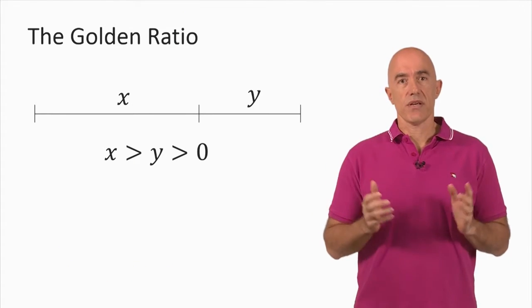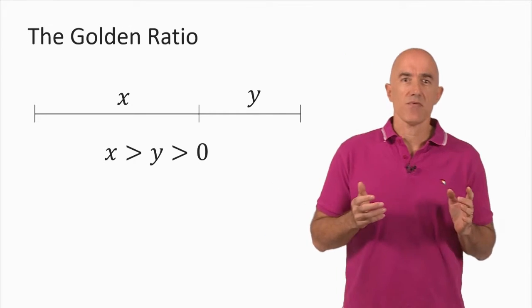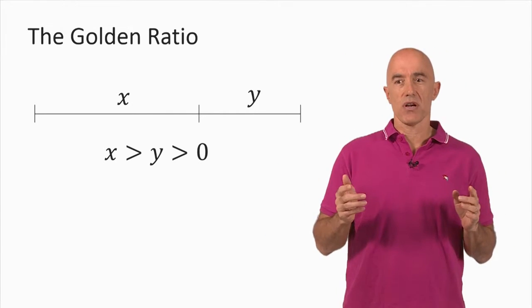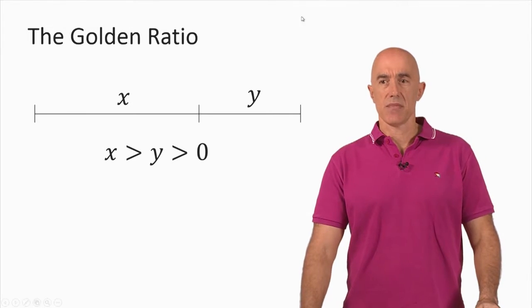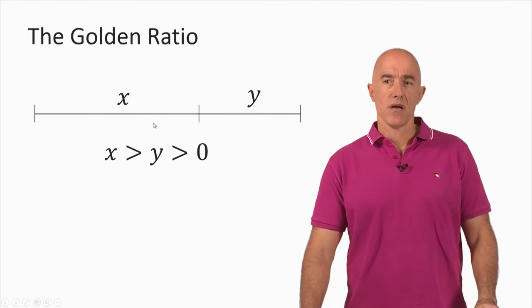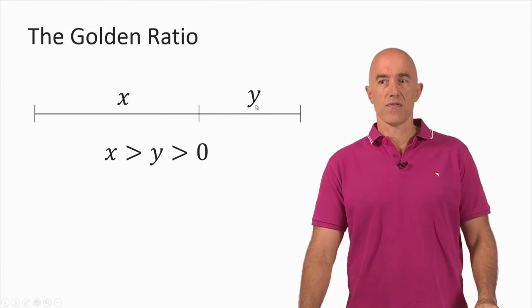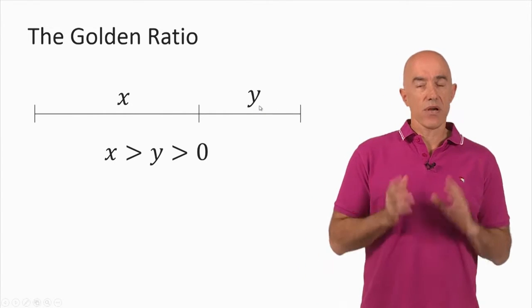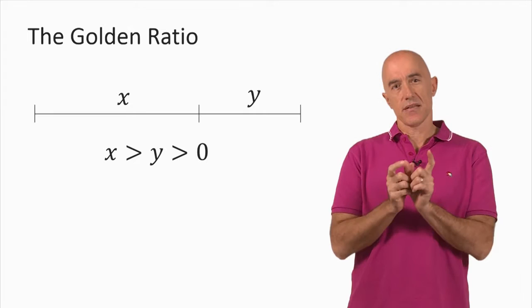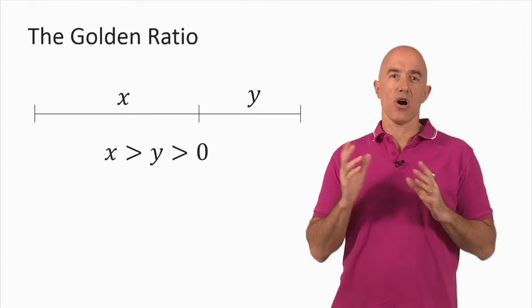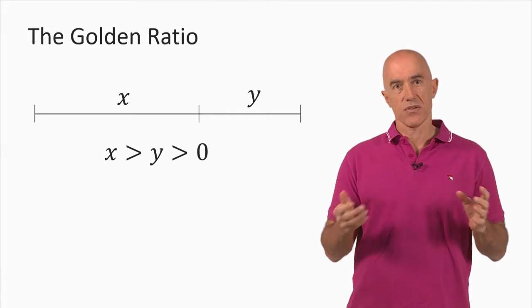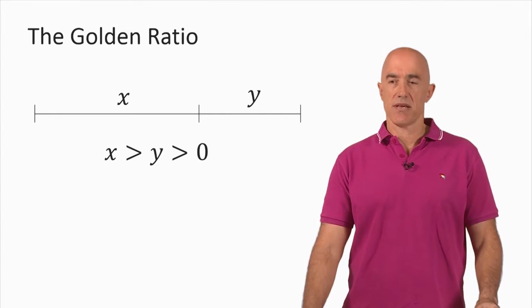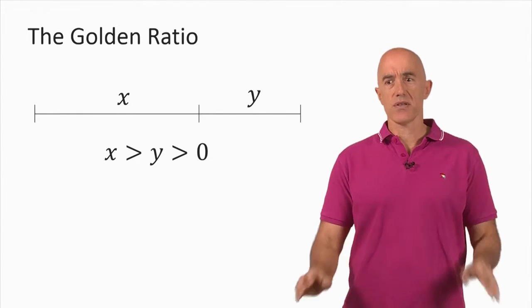So what is the golden ratio? You can understand what the golden ratio is by starting with a line segment and dividing the line segment into two segments, one of length X and one of length Y. We're going to assume that X, the length of X, is larger than the length of Y, and of course they're both positive because they're both lengths of a line segment.